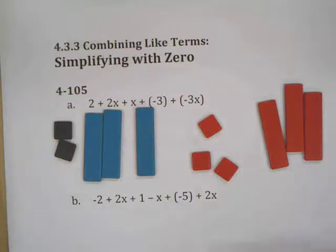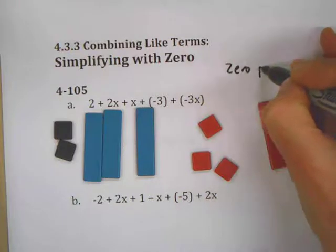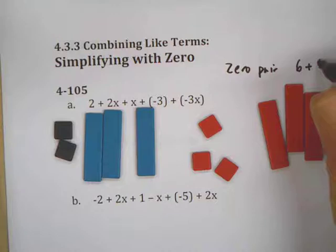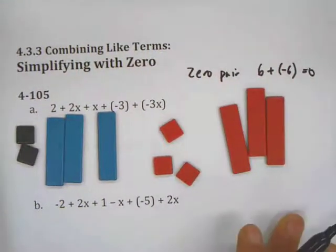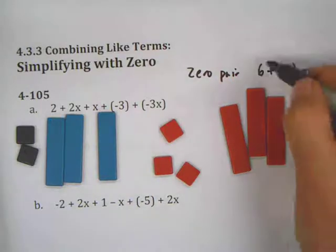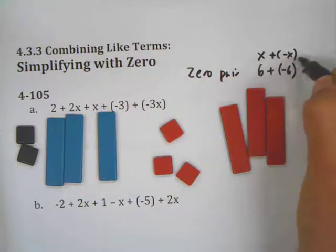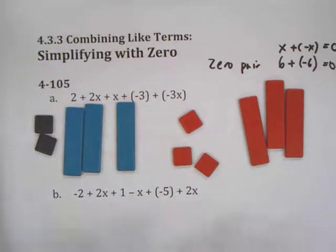This video is about how to combine like terms using the concept of a zero pair. A zero pair is something like when you have a six plus a negative six — these are opposites, and you get a quantity equal to zero. This time we're going to be using things such as x plus a negative x, and that's also going to be equal to zero.